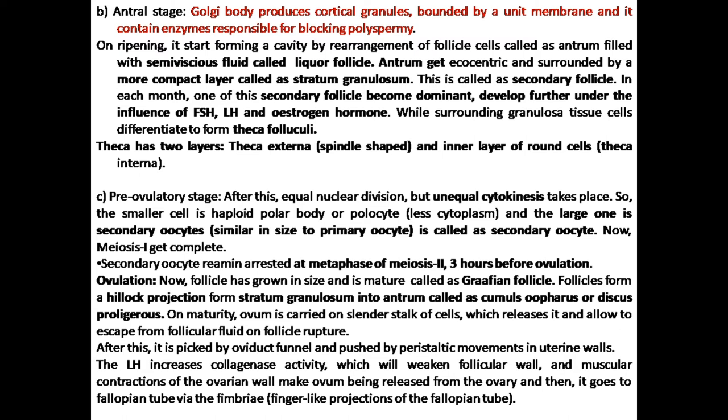The next phase is ovulation. In ovulation, the follicle which has grown in size and matured is called the Graafian follicle. The follicle cells present between the antrum and the secondary oocyte are called the cumulus oophorus, and these cells form a projection. The cells present in the other part of the secondary oocyte, other than the antrum, are called the discus proligerus.